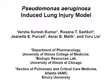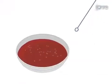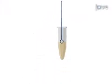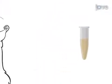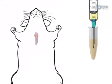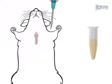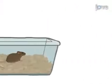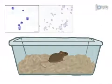The overall goal of this procedure is to mimic pneumonia lung injury conditions in the mouse by Pseudomonas aeruginosa administration. This is accomplished by first preparing Pseudomonas at the appropriate concentration for injection. In the second step, the mouse trachea is carefully exposed and then the bacteria are administered to the lungs by intratracheal injection. In the final step, the disease progression in the mouse is monitored carefully.